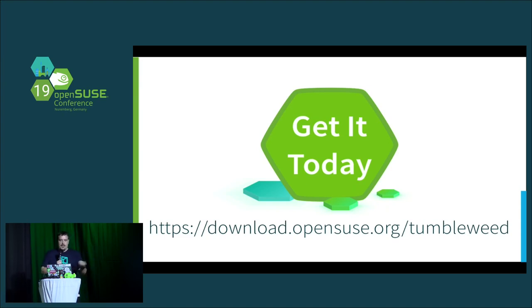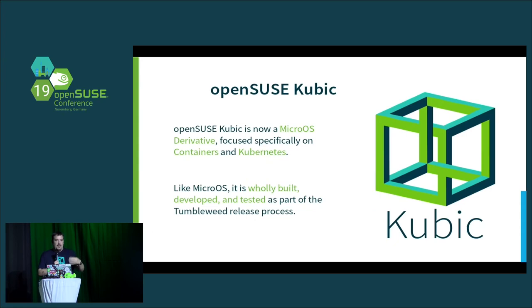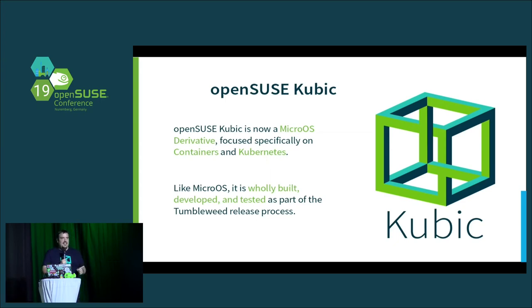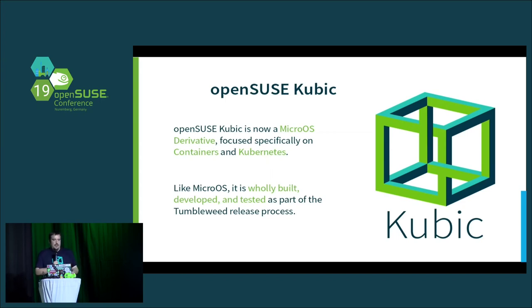So that's MicroOS. What about Cubic? With MicroOS now defined as this general-purpose, single-purpose operating system — you can use it for anything, but we expect it deployed for just one thing at a time — Cubic is now a MicroOS derivative. It's a showcase of what you can do with MicroOS when it comes to containers or Kubernetes. We're still using the name Cubic because people know it and it's part of the Kubernetes ecosystem, known by the Cloud Native Compute Foundation. But from a technical perspective, it's just a MicroOS variant, built, tested, and shipped as part of Tumbleweed.